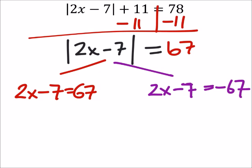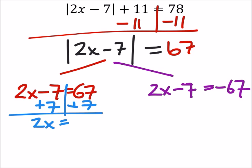Then we're just solving these two equations for x. I'll add 7 to both sides here, and we've got 2x equals 74. Divide both sides by 2, and x equals 37.